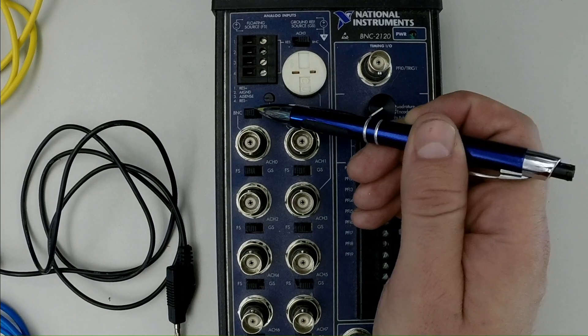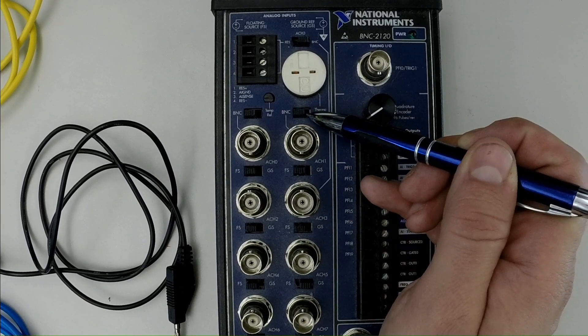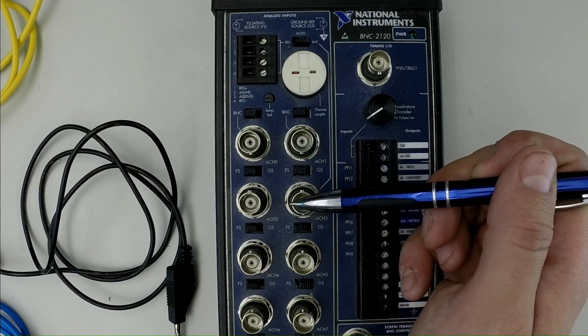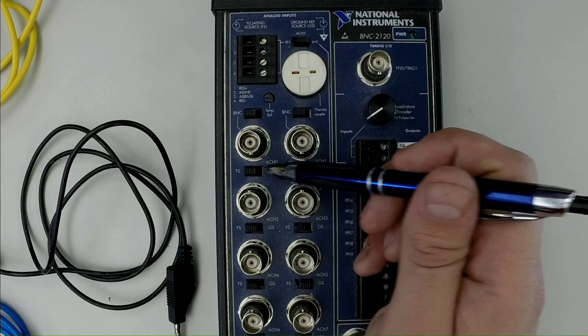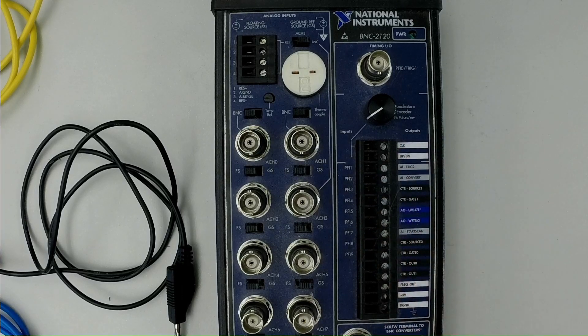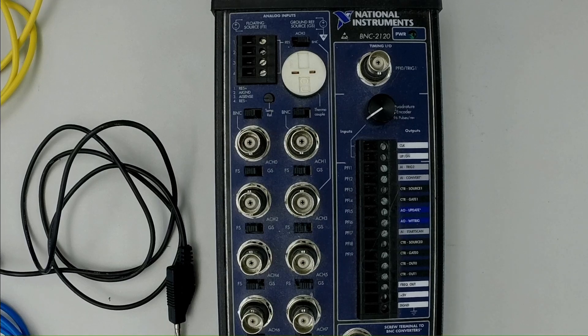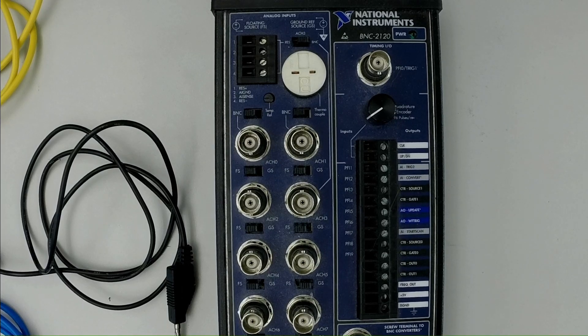So you notice up here the switches are both set to BNC, so that means that the BNC connectors are physically connected to the DAC. And I have both of my grounding selected set to floating source, which is correct for this application since the audio cable is not physically connected to the building's earth ground system. It's not plugged into a wall or anything like that.